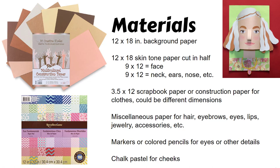You could also use blue skin or yellow skin or green skin, so it doesn't necessarily have to be a real skin tone and it doesn't have to be your skin tone or your student's skin tone. It could be a friend or a famous person. Then 3 and a half by 12 inch scrapbook paper or construction paper for clothes — it could be different dimensions. In my example I just put a 3 and a half by 12 strip on the bottom that makes the shirt, but people made the clothing in all sorts of different ways.